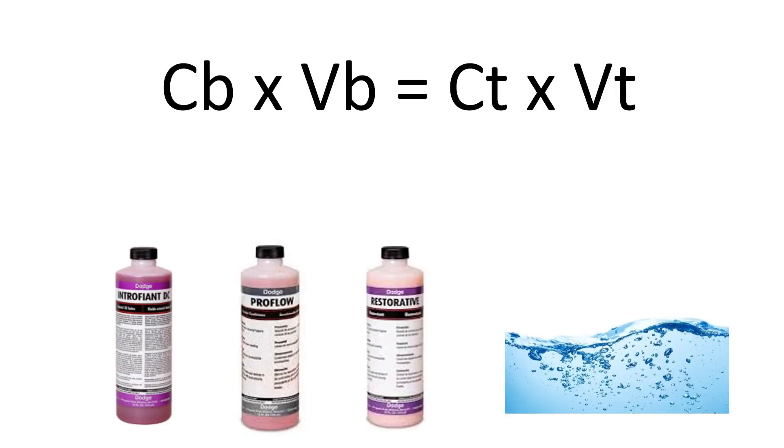Let's start with potential elements of a solution. We have our calculation here at the top. CB stands for the index of the arterial fluid that you've chosen, VB stands for the volume of arterial fluid that you are going to use, CT stands for the solution strength, and VT is the total volume of everything that goes into your tank.